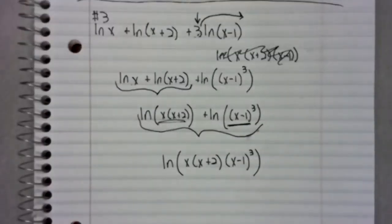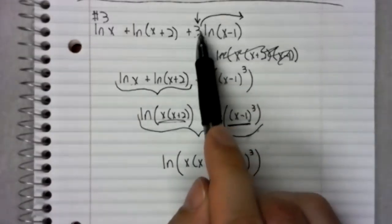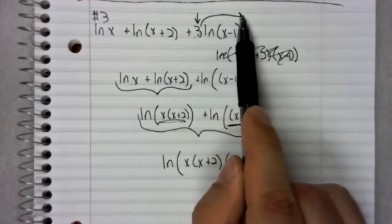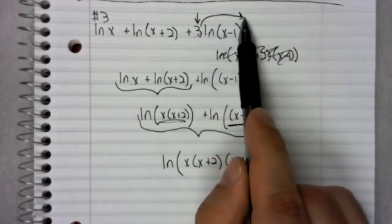The trick we use in problem three, where we have to take this and turn it into a power, reappears in problem eight, where you have two times the logarithm of x, and you have to rewrite it as the logarithm of x squared.